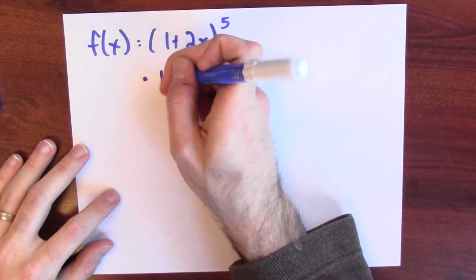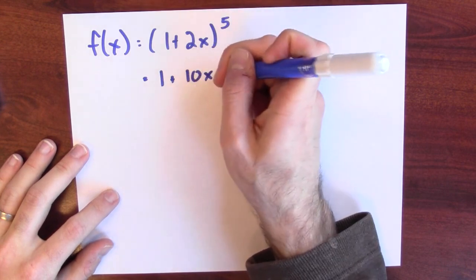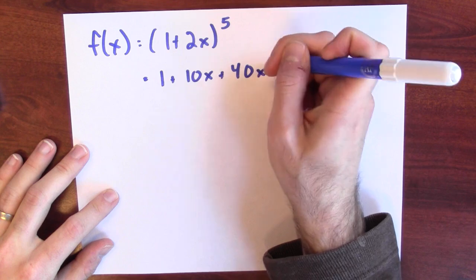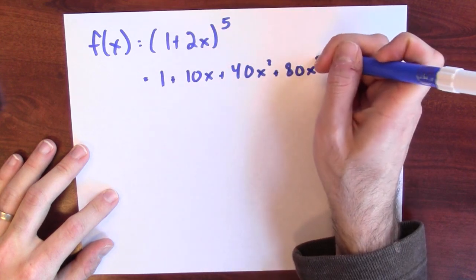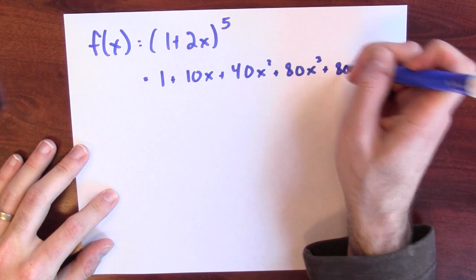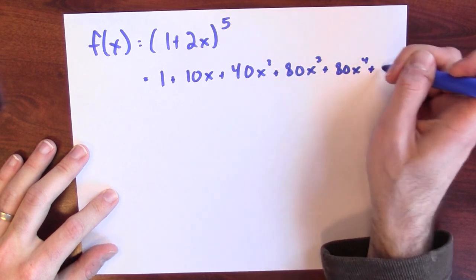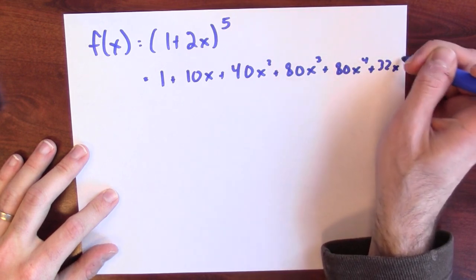1 to the fifth is just 1, plus 10x, plus 40x squared, plus 80x cubed, plus 80x to the fourth, plus 32x to the fifth.